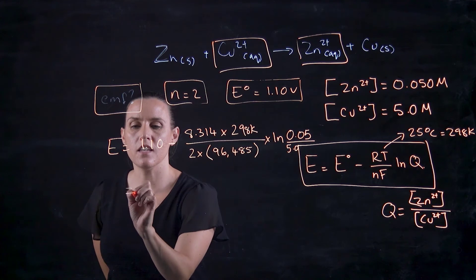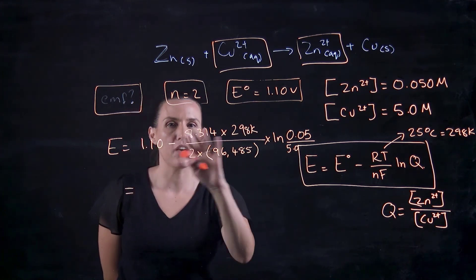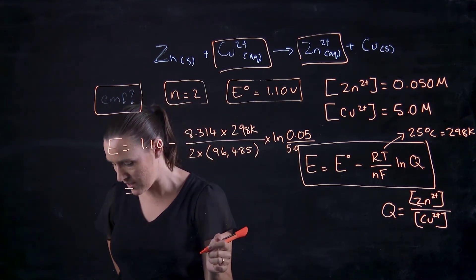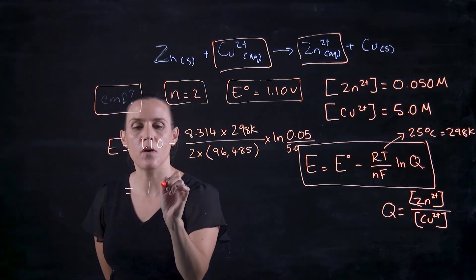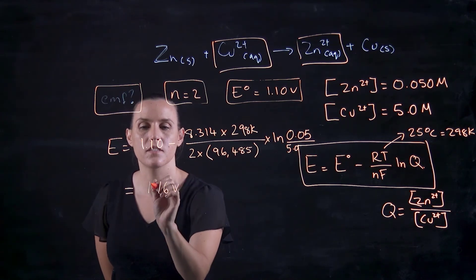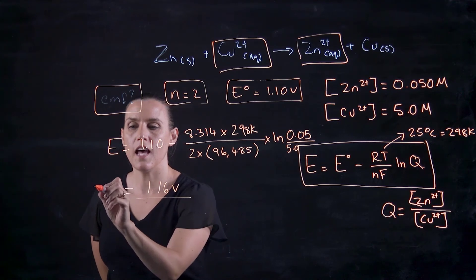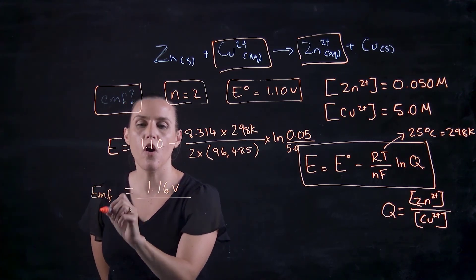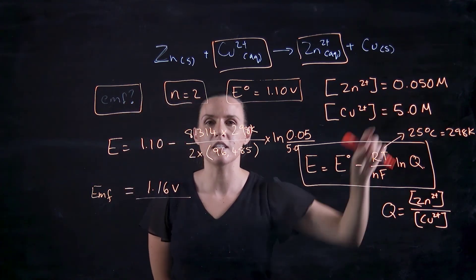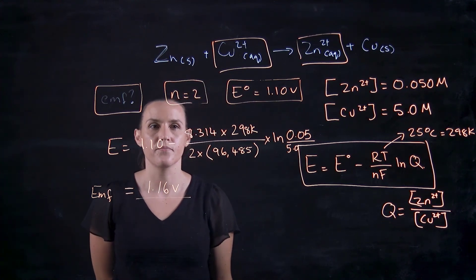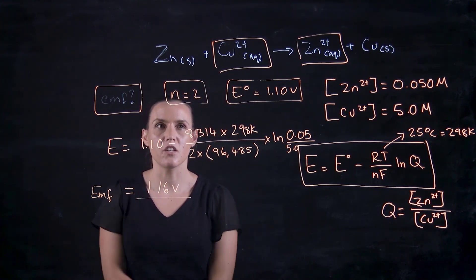So plugging that into your calculator very carefully, keeping everything in little separate sections, hopefully you get 1.16 volts. So that is the EMF of the system when you have these particular concentrations. Thank you.